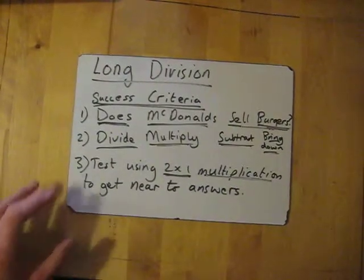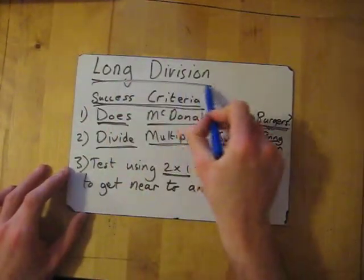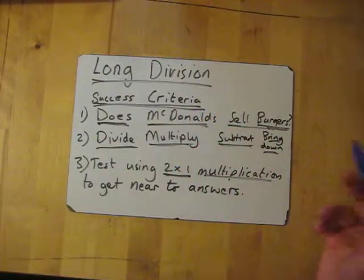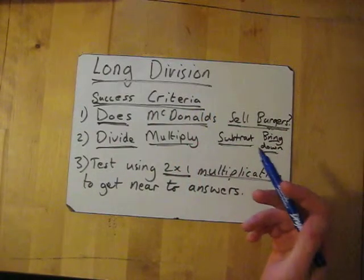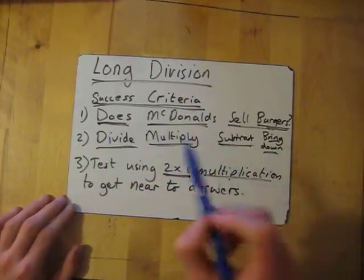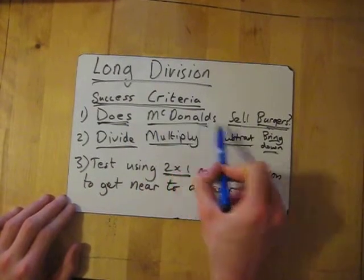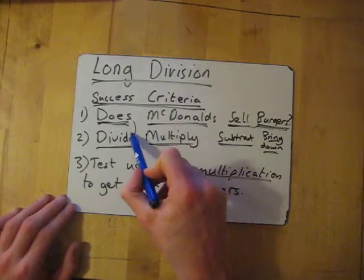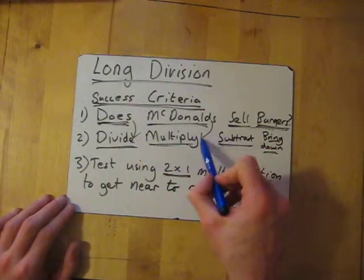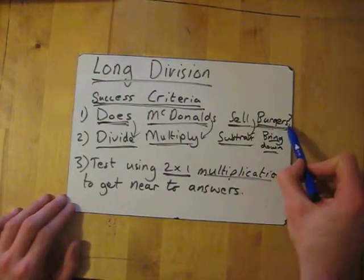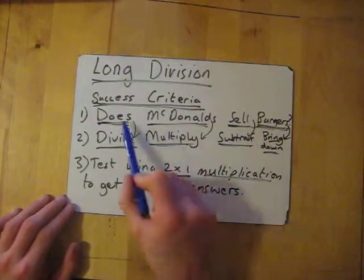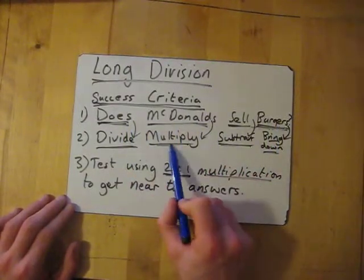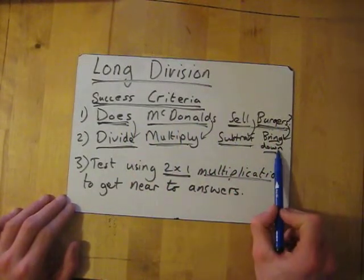Right, long division. Long division success criteria - some people find it tricky, but hopefully this will help you out. The thing you need to remember is 'Does McDonald's Sell Burgers,' and what that stands for is: Divide, Multiply, Subtract, Bring down.